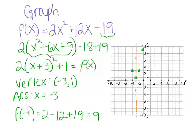Using the axis of symmetry, we can reflect that point. Now we have a nice skeleton to trace our parabola through. So we started in standard form and had to use completing the square to put it into vertex form.